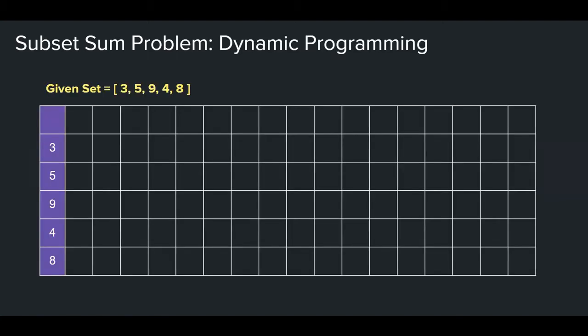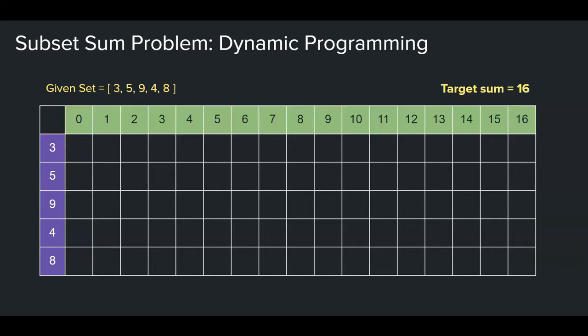First, construct a 2D grid. The number of rows in the grid is the number of elements in the set we're trying to solve, plus 1. So the evil teacher gave us 5 elements as part of the given set: 3, 5, 9, 4, and 8. And so there are 5 rows plus 1, 6 rows in this grid. Number of columns is the same as the target sum, plus 1. So the target sum is 16, so we have 16 columns plus 1, or 17 columns, from 0 to 16.